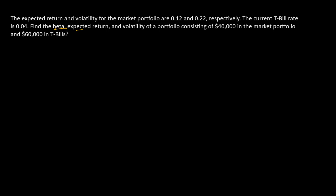Here we're going to find the beta, expected return, and volatility of a portfolio — a very special portfolio comprised of two assets: the overall market portfolio and T-bills. So we've got a two-asset portfolio where one asset is the overall stock market and the other is T-bills.